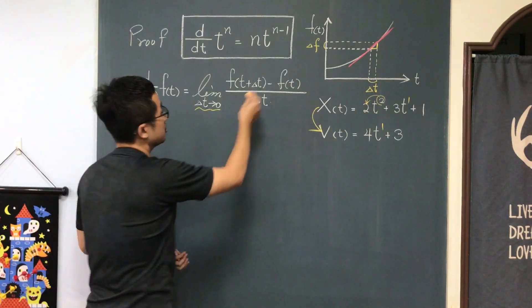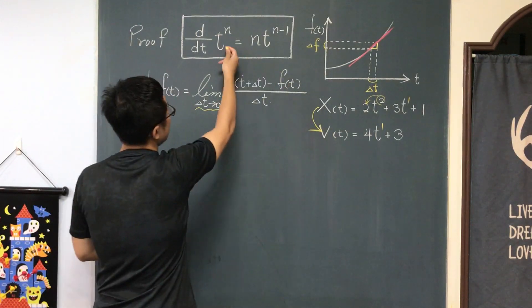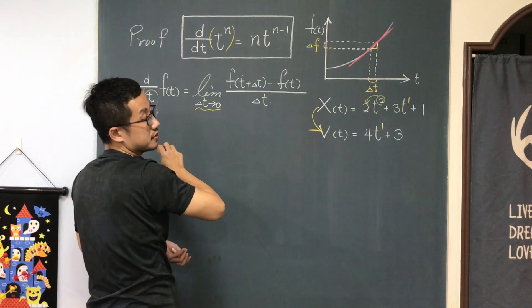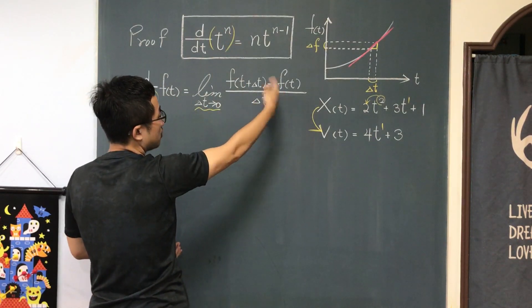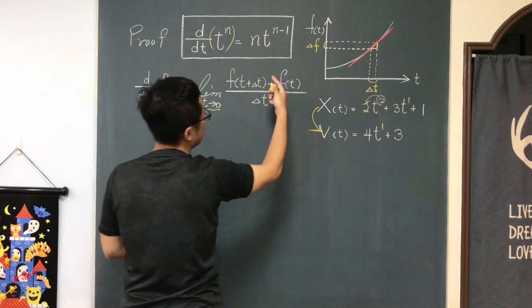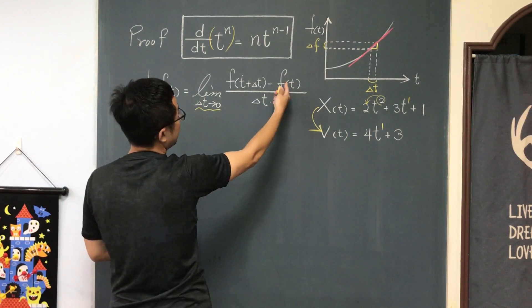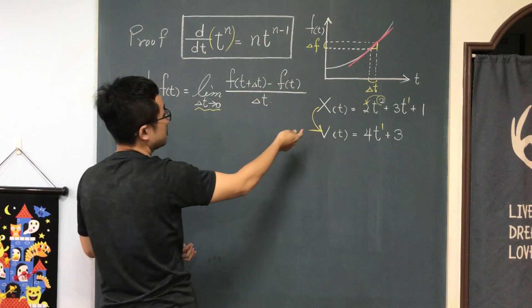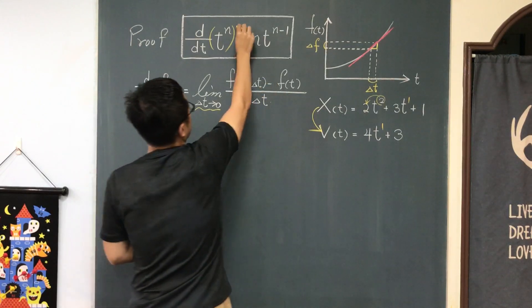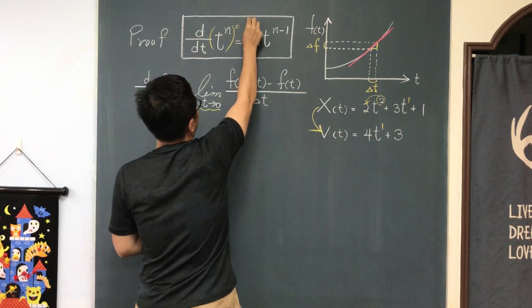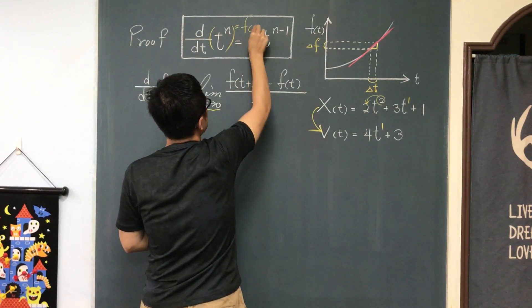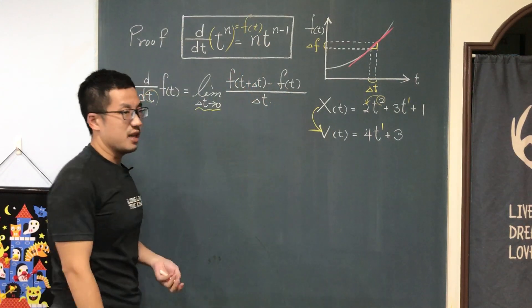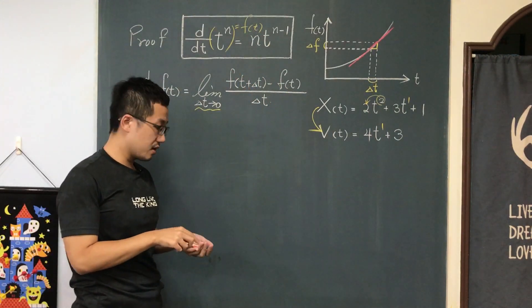The function f(t) is t to the nth power. So I can replace f(t) simply by tⁿ.